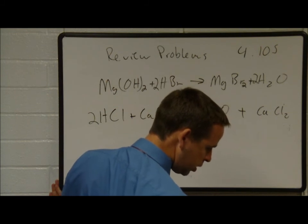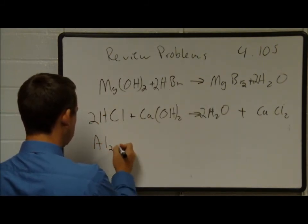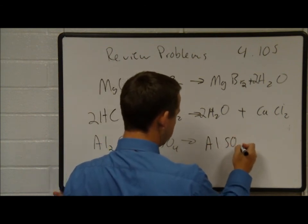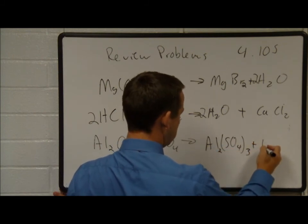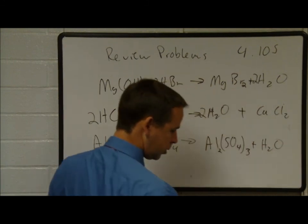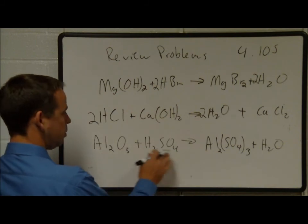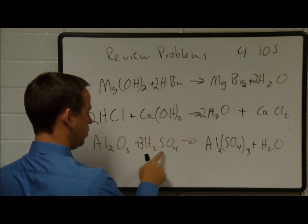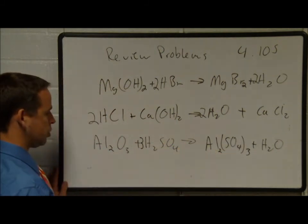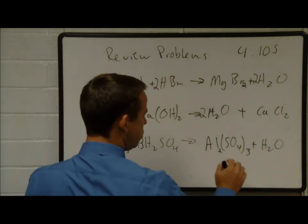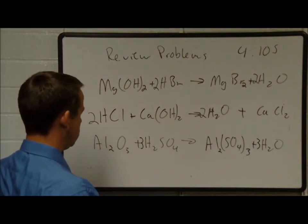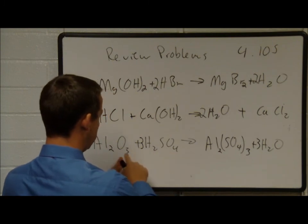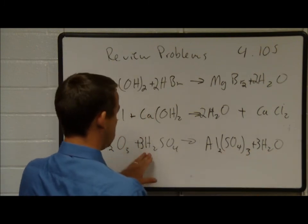Aluminum oxide plus sulfuric acid, H2SO4, gives aluminum sulfate Al2(SO4)3 and water. We have 2 aluminums on each side. The sulfate group stays together: we need 3 sulfates, so put 3 in front of H2SO4. That gives 6 hydrogens on the left, and 2 per water so 3 waters. Checking oxygens: 4×3=12 plus 3 = 15 on the left, 12 plus 3 = 15 on the right. Balanced.